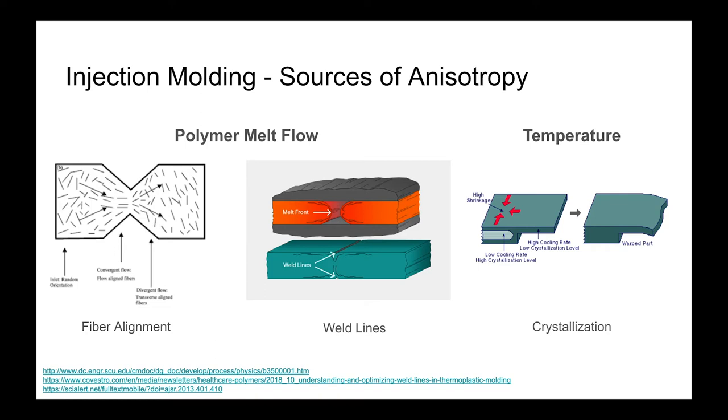Weld lines, where the polymer melt flow joins, can be areas that you get poor entanglement of polymers during the molding process. So these weld lines can be close to full strength, or they can be as little as 20% of the strength of the bulk material, depending on the system, the geometry, and the pack pressure of the particular part.